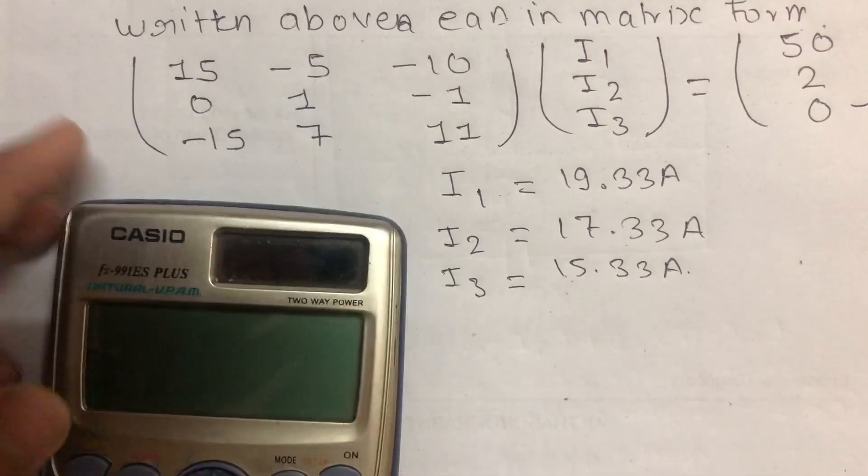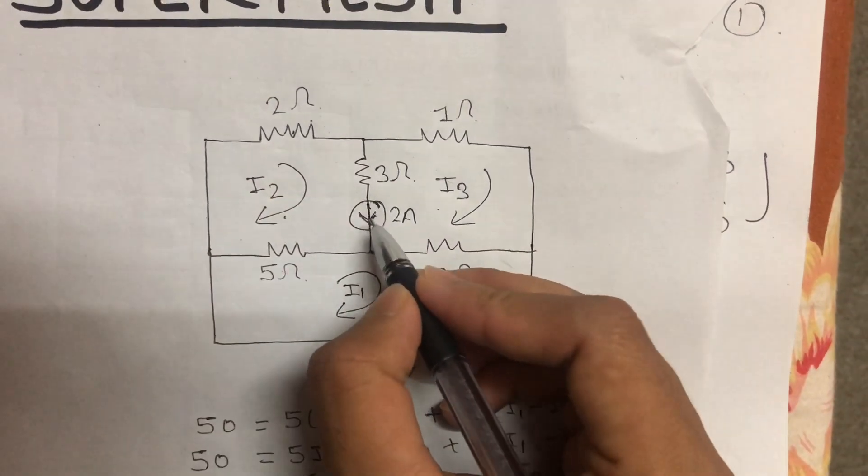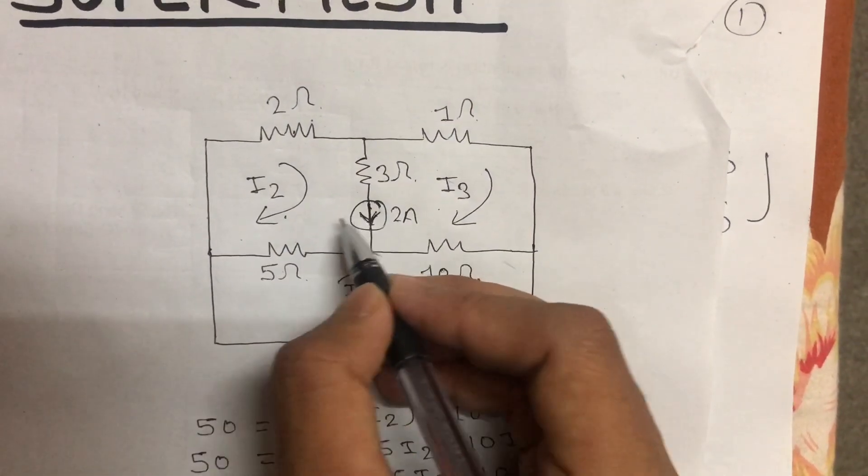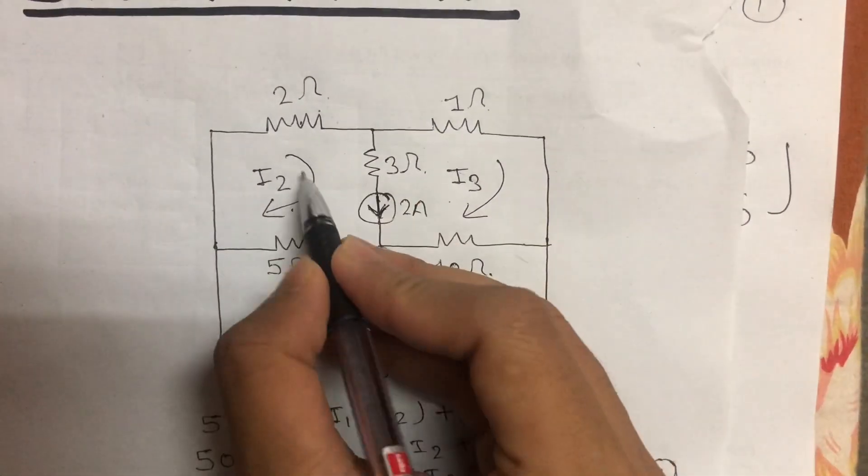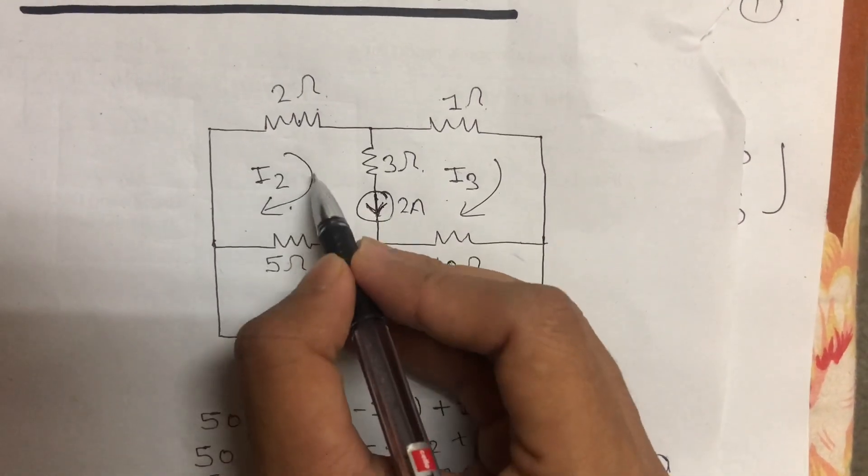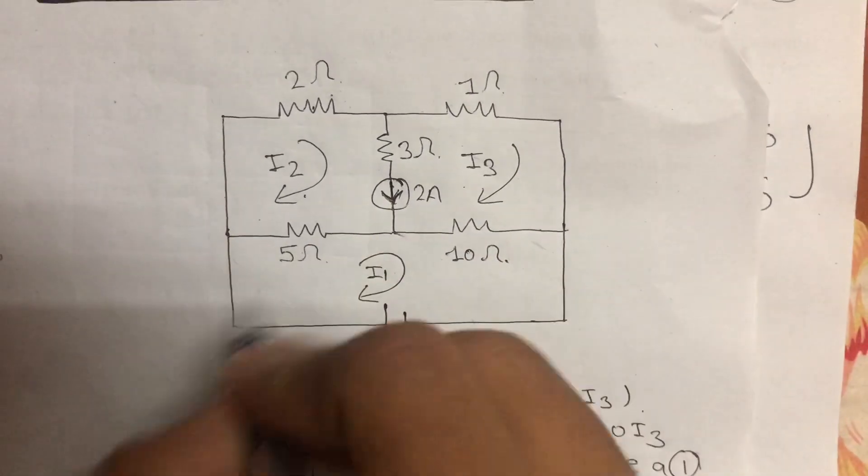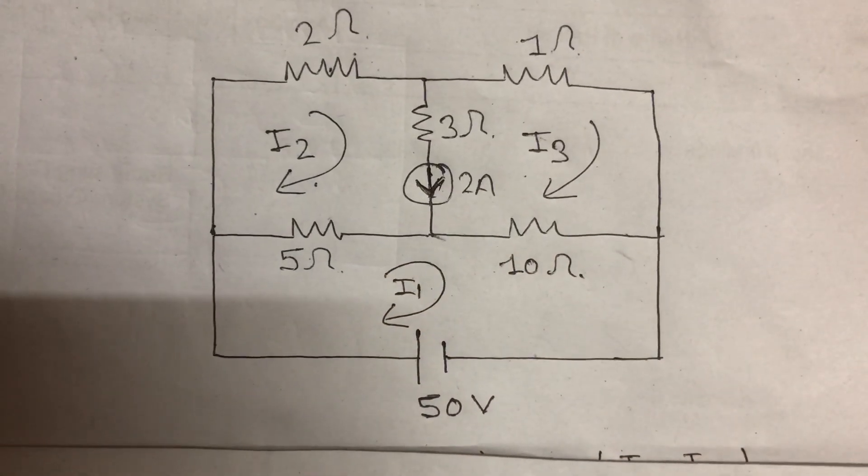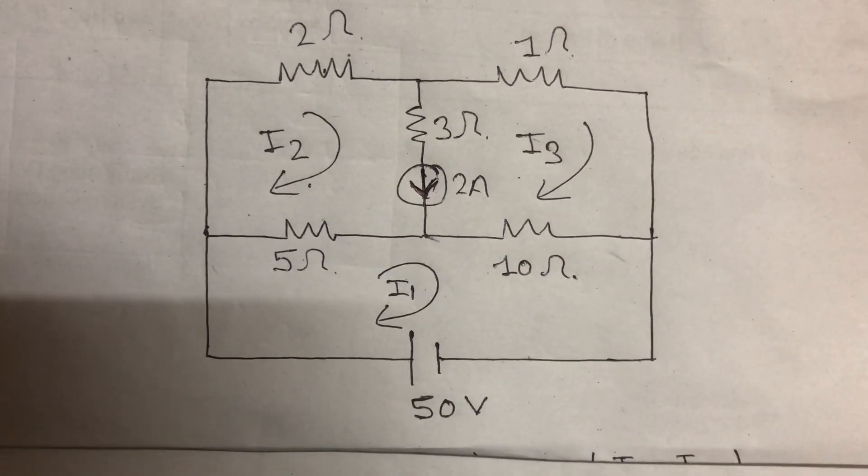So this is the super mesh analysis method. We need to check the super mesh condition and apply it in the direction shown. If you liked this super mesh method, please hit the subscribe button and leave a comment.